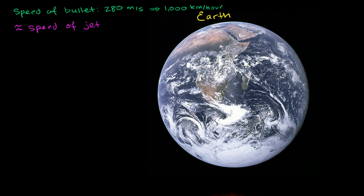So just to give a sense of scale here, the Earth's circumference, so if you were to go around the planet, is about 40,000 kilometers. So if you were to travel at the speed of a bullet or the speed of a jetliner, at 1,000 kilometers an hour, it would take you 40 hours to circumnavigate the Earth.